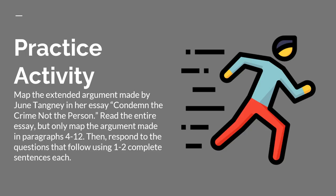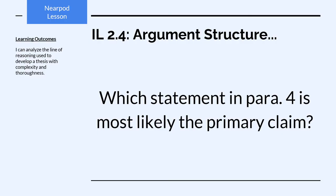Now let's move into the practice activity where you'll do the same sort of thing you just did — map an extended argument and answer some questions — this time over an essay by June Tangney called 'Condemn the Crime, Not the Person.' Pause the video and read that essay in its entirety. When you come back, unpause the video and we'll map out the arguments she makes in paragraphs 4 through 12, then respond to the study questions that follow. Now that we've read the text, let's start mapping our argument.